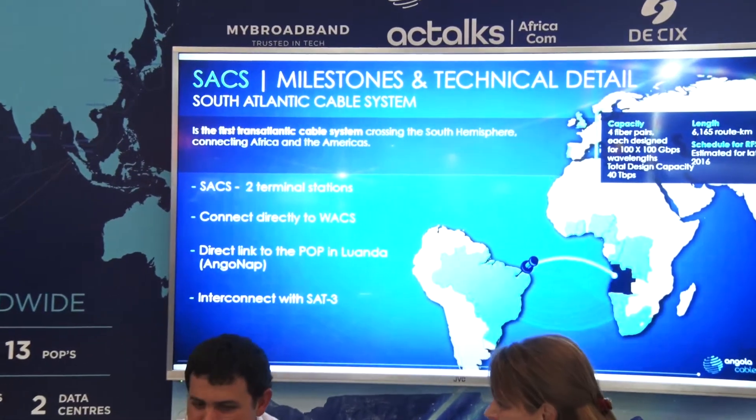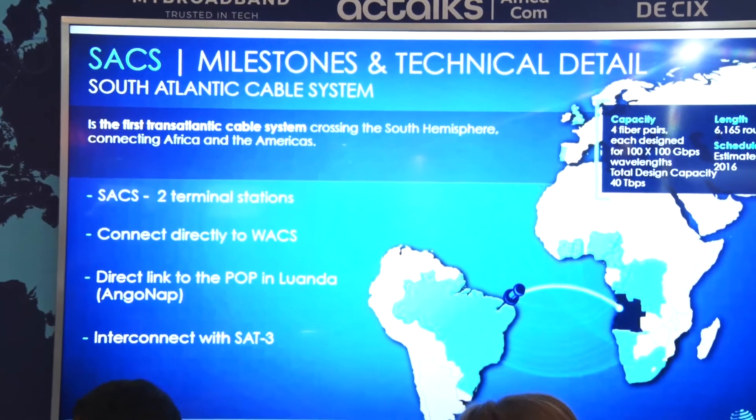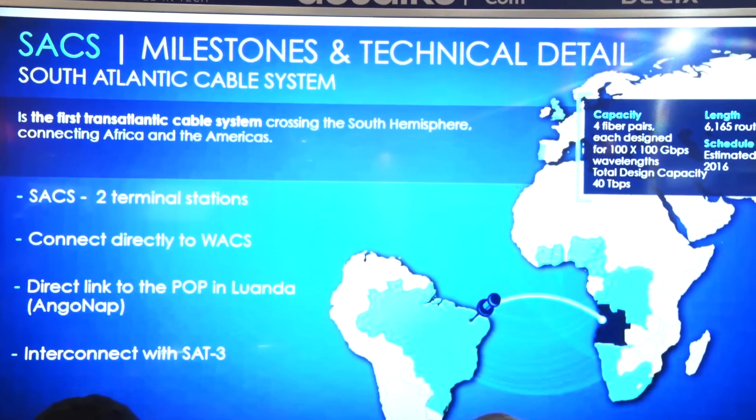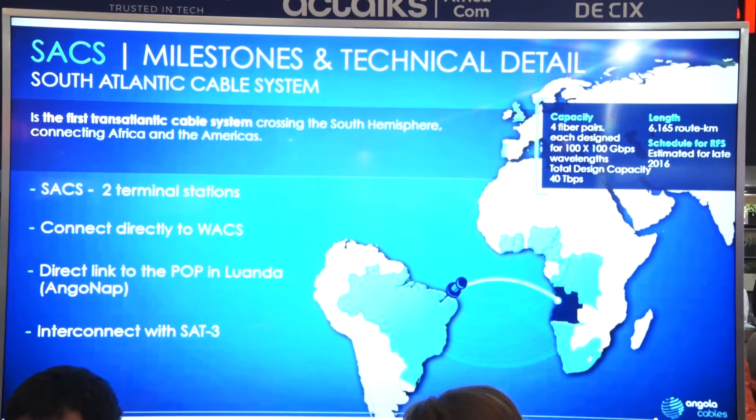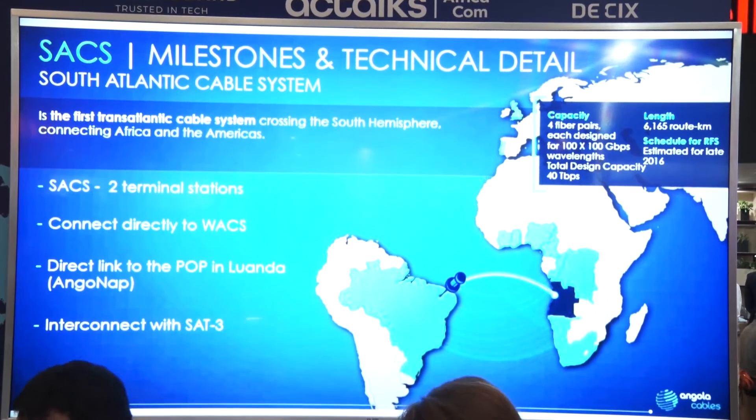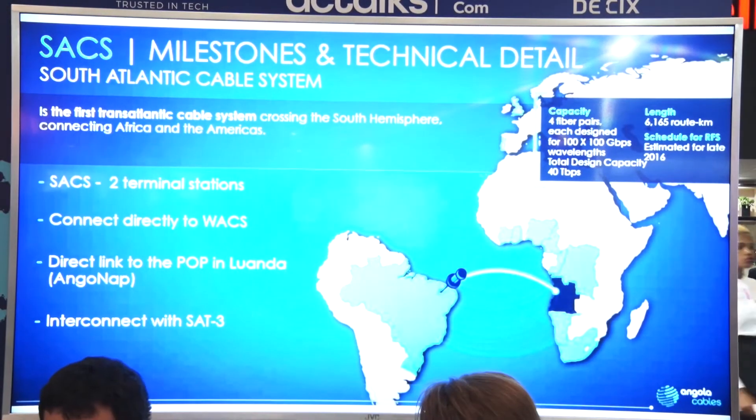That's a direct path on the optical layer. This direct path has two great highlights we are talking about today: the latency, because we are going from Africa to the US, and the second point is the largest path in kilometers and miles. We are using SACS and Monet integrated to create a direct light path.